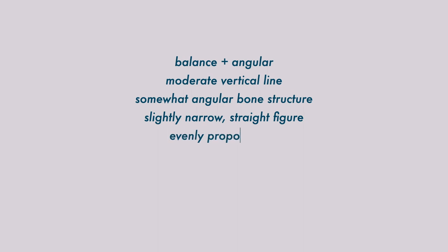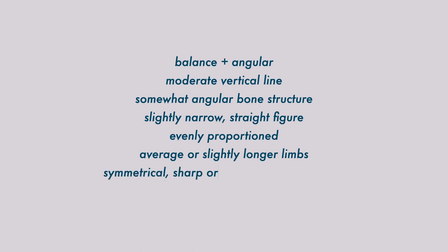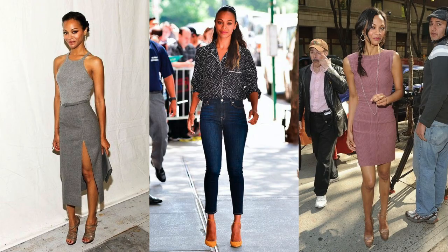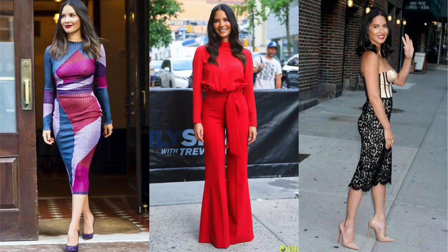She has evenly proportioned waist, bust, and hips with a slightly straight appearance. Her arms and legs tend to be average in length or somewhat long. She may appear compact or slightly muscular, and her facial features are also symmetrical, slightly sharp or squarish, with moderate to large eyes and moderate lips. Some great examples of dramatic classic women are Zoe Saldana, Olivia Munn, and Jackie O.